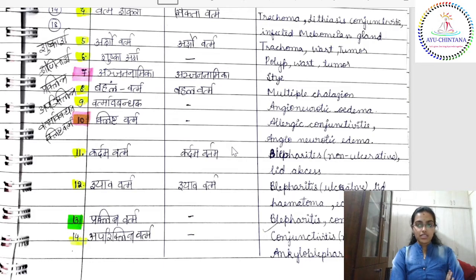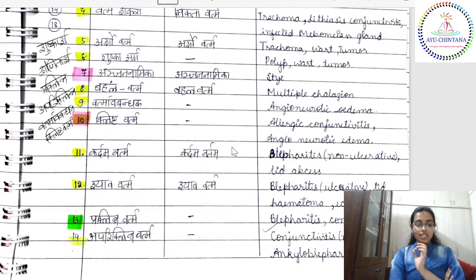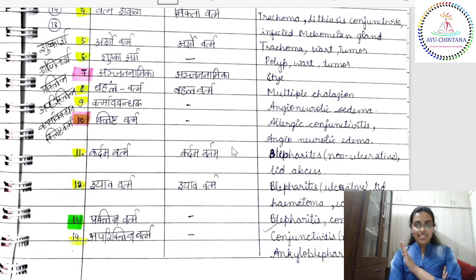So until now, in Vartma Gata Vyadhi, we understood there are 17 Vyadhis that are Sadhya. In that, 9 are Lekhana Sadhya Vyadhi. Now, in whatever we have discussed until now, how many Lekhana Vyadhis have we discussed? Seven. So only 2 are remaining. That is how you should remember — not omitting points discussed. Seven we have already discussed, and only two are remaining. Like that if you remember, you will finally remember all nine things.